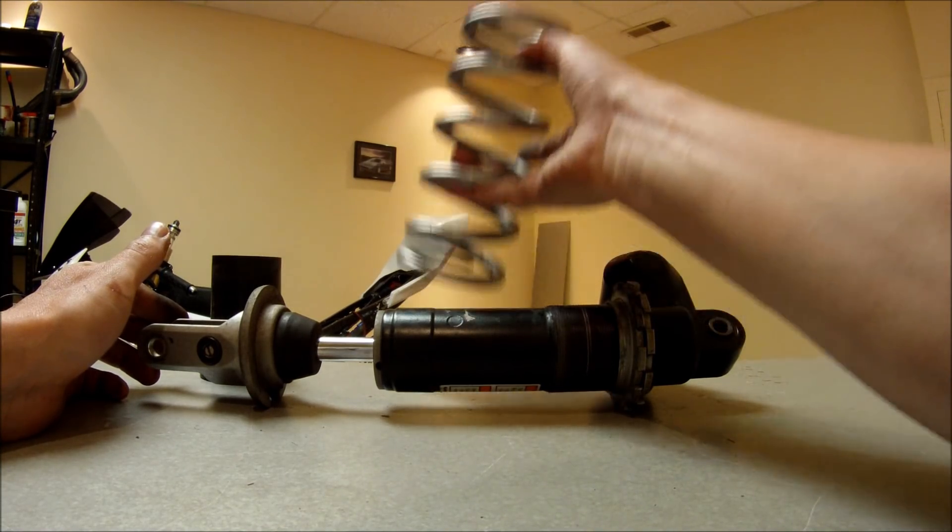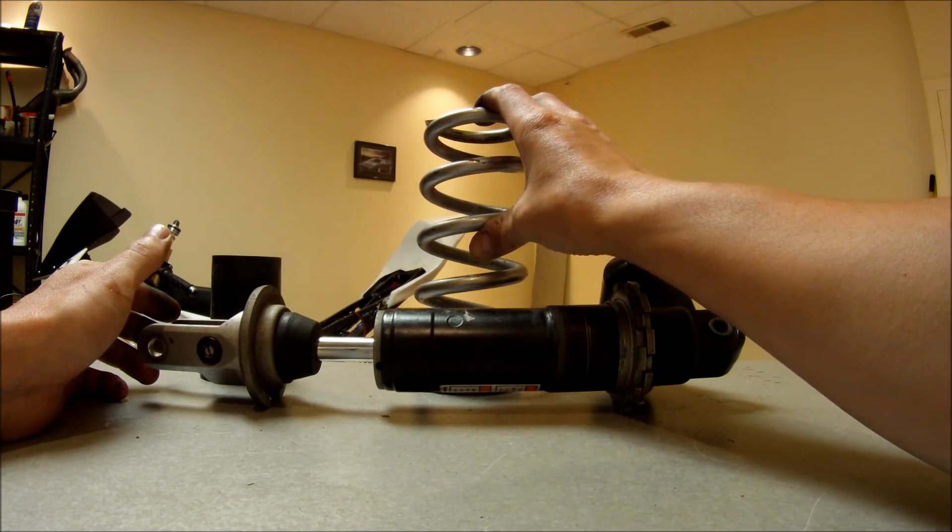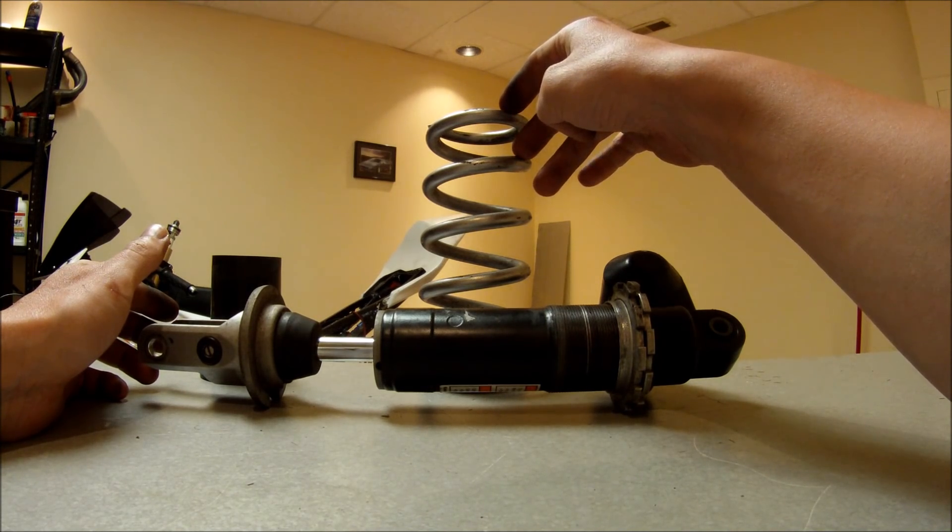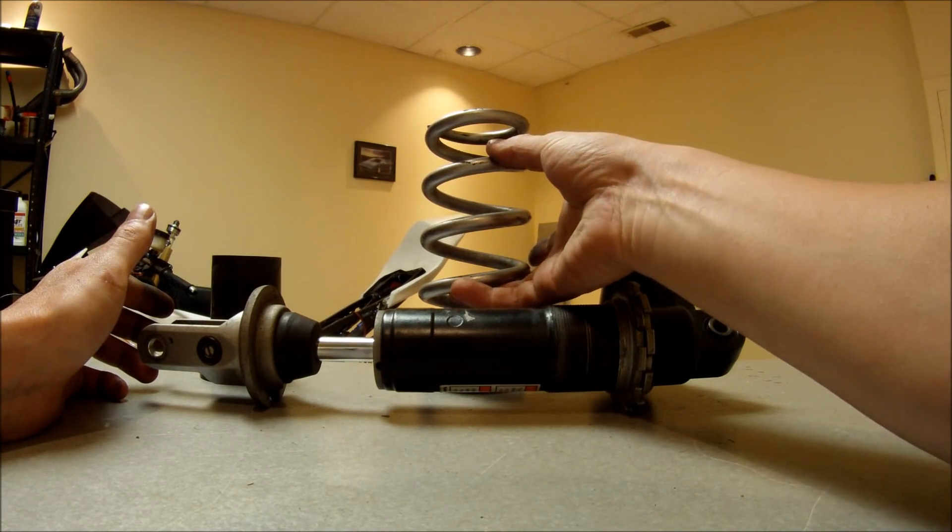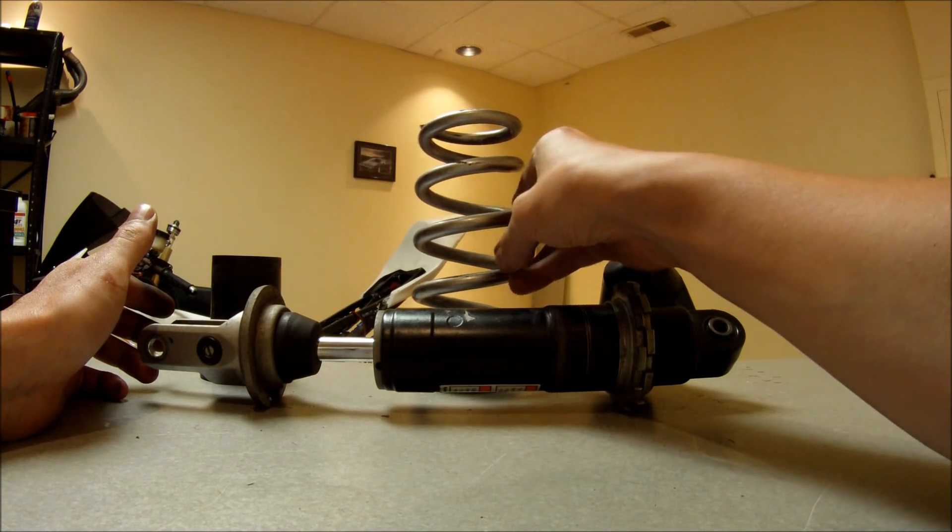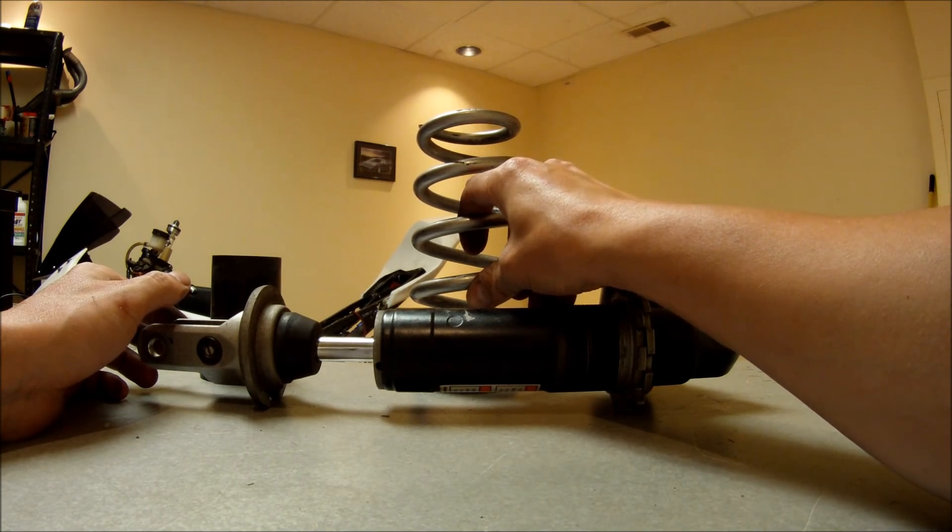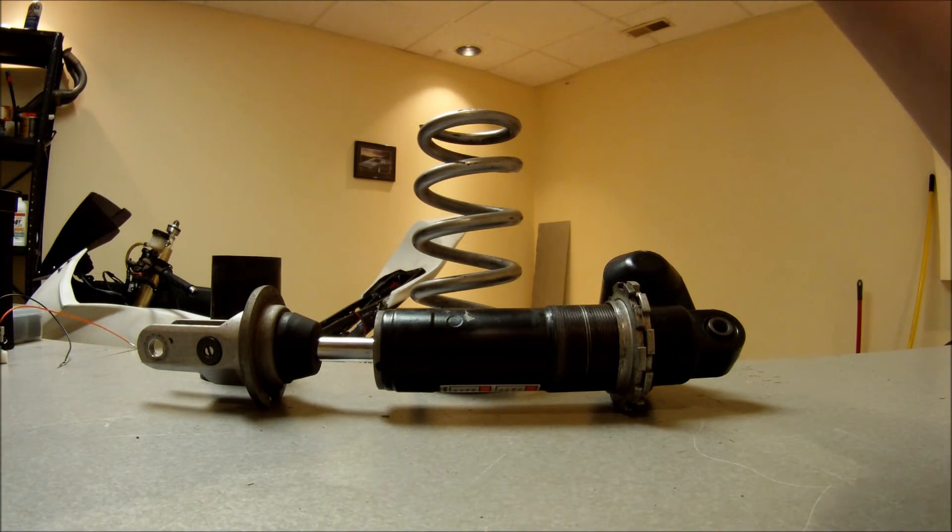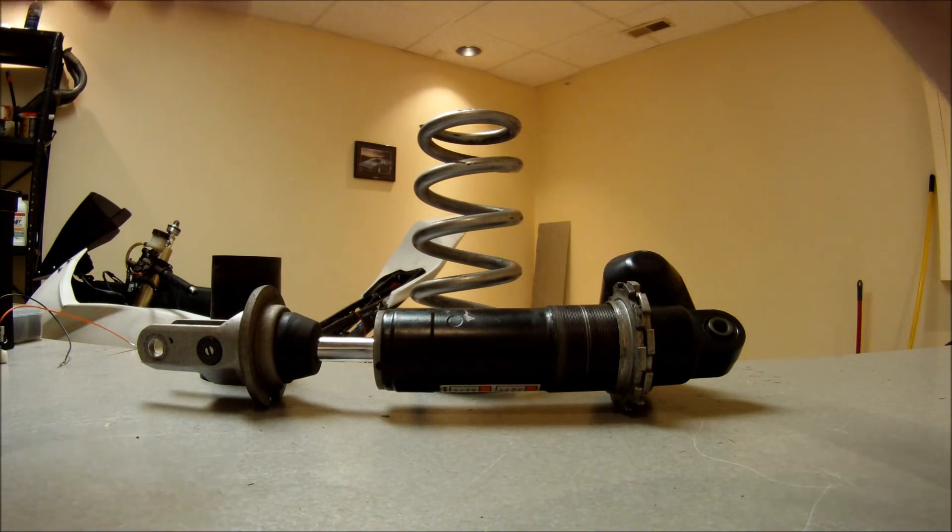They also rate these in pounds per inch. All you have to do is multiply the kilograms per millimeter number by 56 and you'll have the pounds per inch rating. So 8.3 times 56 would be roughly 465 pounds per inch. They're just two different ratings that mean the exact same thing.